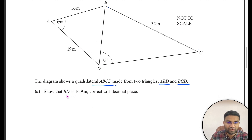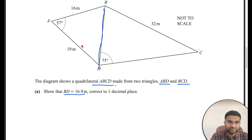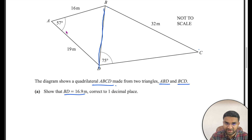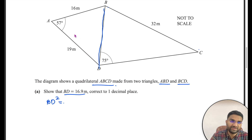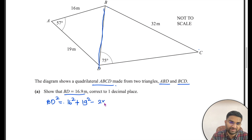First, we need to find BD. We are given AB = 16, AD = 19, and the angle between them is 57°. Since we have two sides and the included angle, we can apply the cosine rule directly: BD² = 16² + 19² − 2 × 16 × 19 × cos 57°.